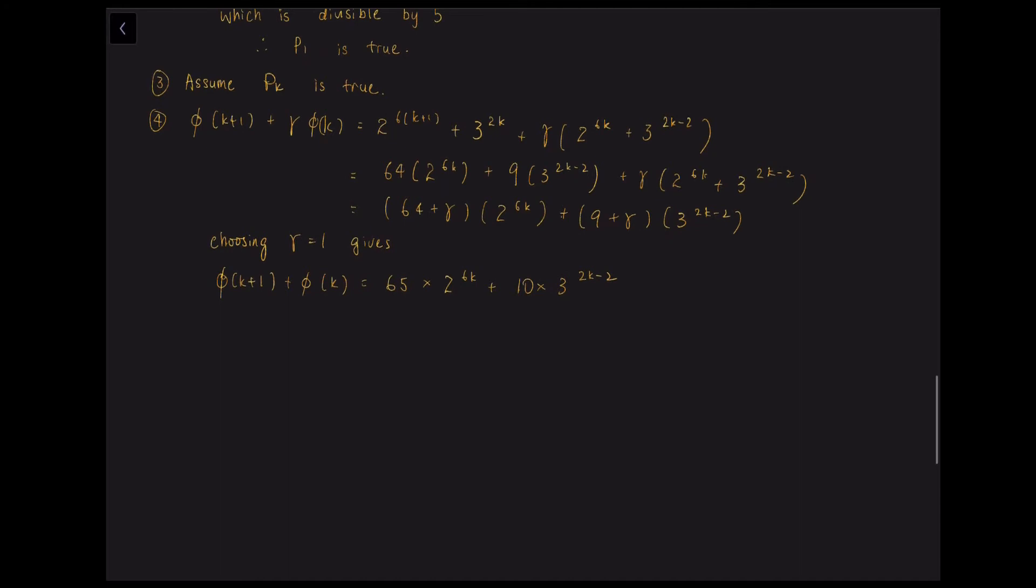So phi k plus 1 plus phi k is divisible by 5. And we know that pk is true because we have assumed that. So if pk is true, phi k is divisible by 5. So pk plus 1 is true as phi k plus 1 must be divisible by 5 as well.